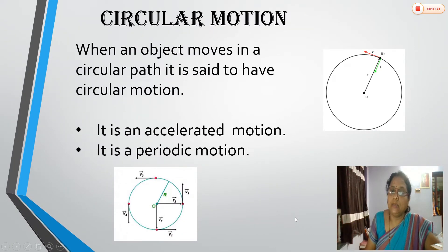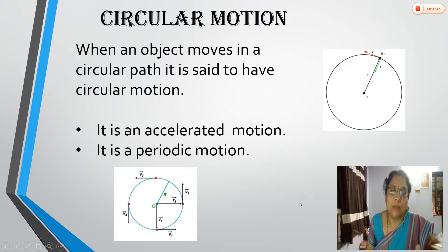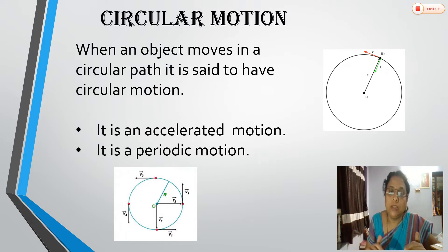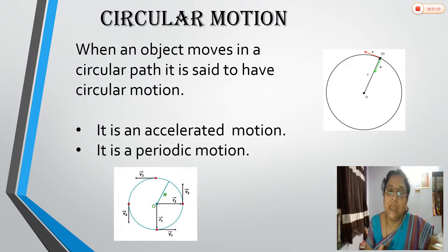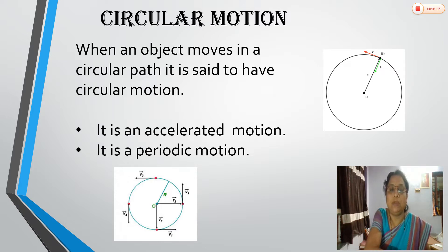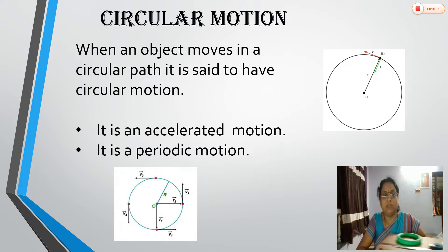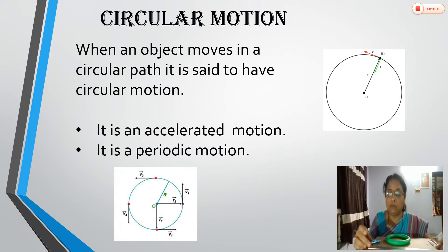What is meant by circular motion? As we know in our daily life there are different types of motion: translatory motion, periodic motion, circular motion, rotational motion, and simple harmonic motion. We know that when an object changes position, we call it motion. Now we want to see what circular motion is.